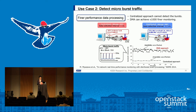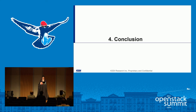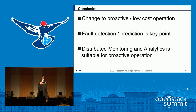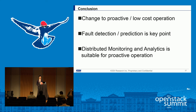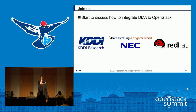This use case is also very good for mobile carriers. In conclusion of my part: KDDI wants to change to proactive operation, meaning low-cost operation. In proactive operation, fault detection and prediction are very important — that is monitoring. But the current centralized monitoring architecture is not suitable for proactive operation. We confirmed that distributed monitoring and analytics — DMA — is suitable for proactive operation. We have started discussing how to integrate this architecture into OpenStack with NEC and Red Hat. If you are interested in this architecture, feel free to contact me.